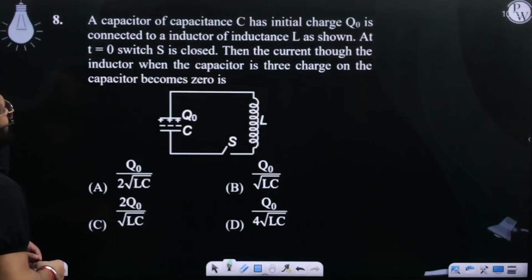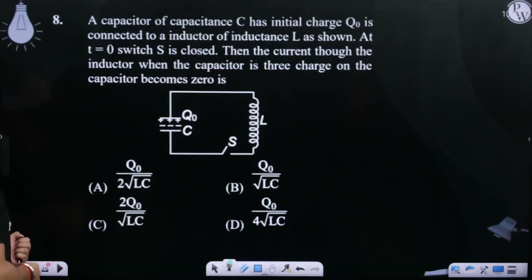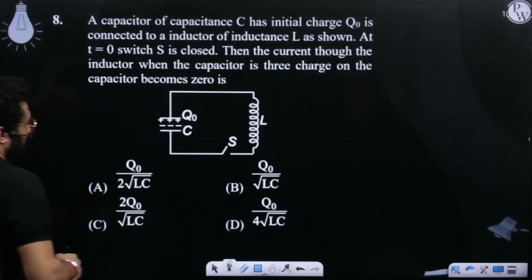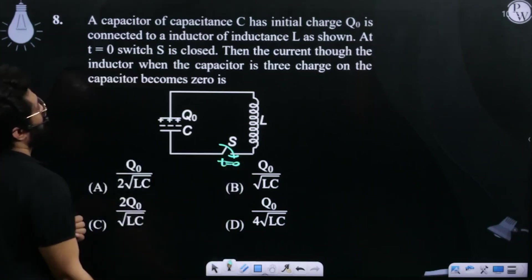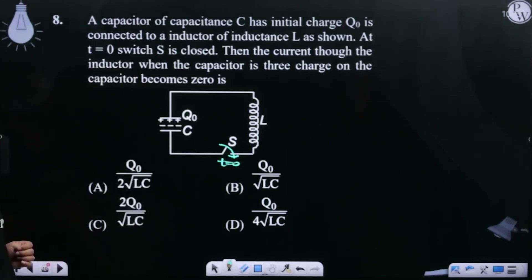A capacitor of capacitance C has initial charge Q naught is connected to inductor of inductance L as shown. At t equals 0 switch S is closed. Then the current through the inductor when the capacitor is 3...